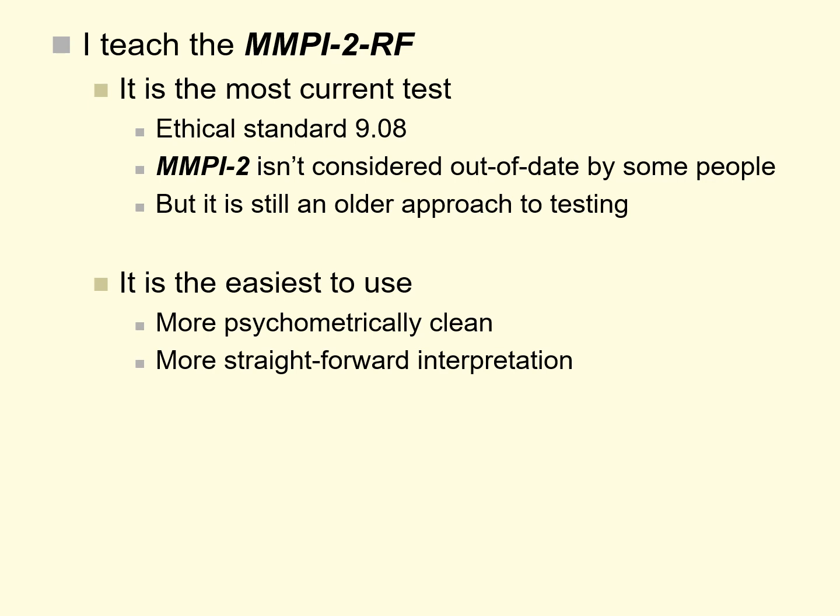The MMPI-2 isn't technically out-of-date, but it is an older test and reflects a somewhat older approach. It's also longer and has some other disadvantages compared to the MMPI-2-RF. The RF is easier to use, more psychometrically clean, and interpretation — as complicated as it is — is relatively more straightforward than interpreting the older MMPI-2.